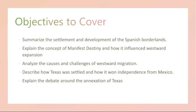The annexation of Texas into the United States was a contentious issue. Advocates, including President James K. Polk, viewed it as the fulfillment of manifest destiny and an opportunity to expand U.S. territory. Opponents were concerned about the extension of slavery into Texas, as it threatened the delicate balance between slave and free states.